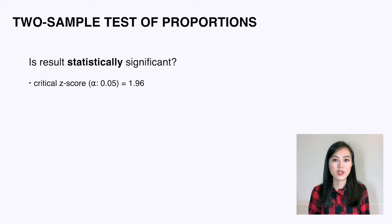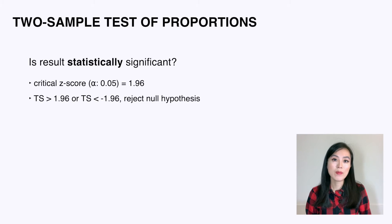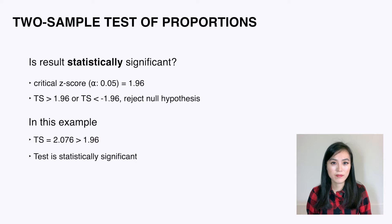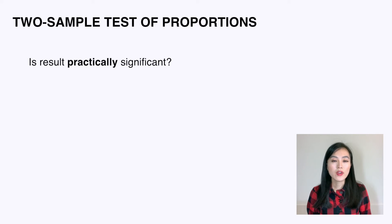Next we compare it with the critical z-score for alpha = 0.05, which is 1.96 at a 95% confidence level. If the test statistic is greater than 1.96 or less than negative 1.96, we reject the null hypothesis and conclude there is a statistically significant difference. In this example the test statistic is 2.076, which is larger than 1.96, so the test is statistically significant.